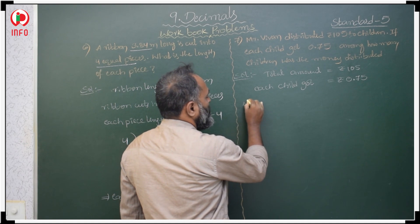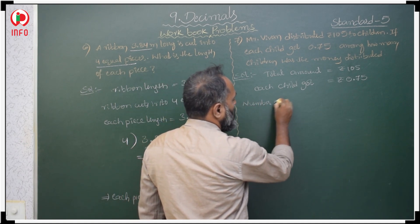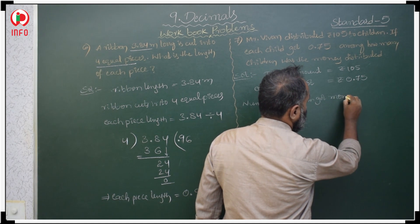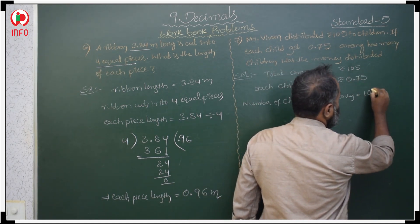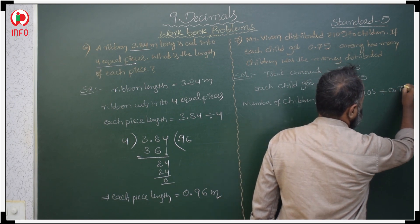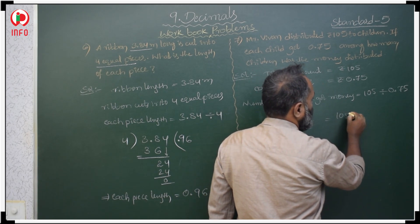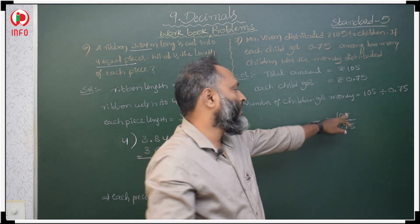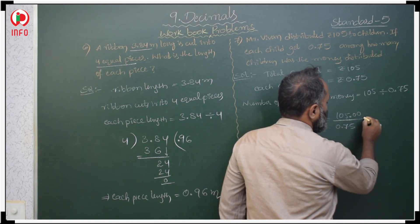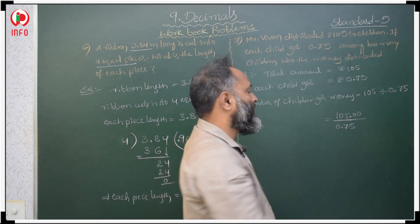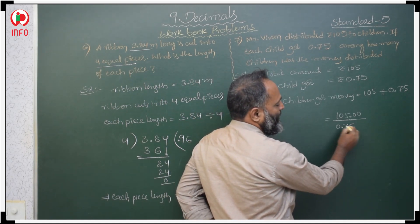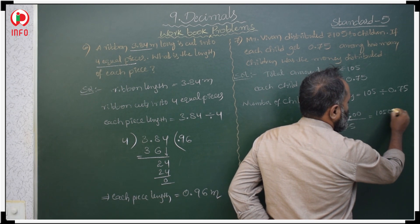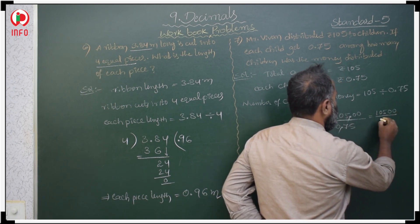Number of children who got money is equal to total money divided by how much each one got. That is 105 divided by 0.75. Here we have a decimal point in 0.75 but not in 105. We convert 105 into like decimals as 105.00. After the decimal point we have 2 places, so the decimal gets cancelled. That gives 10,500 divided by 75.